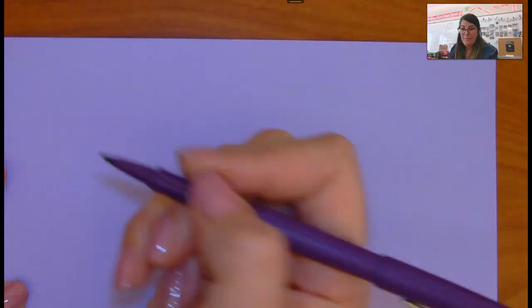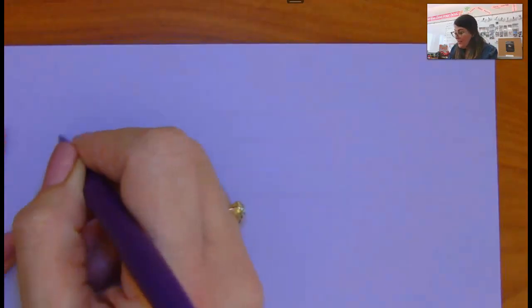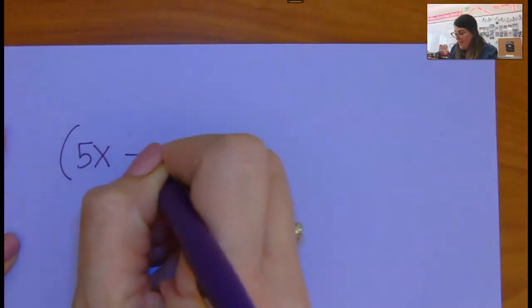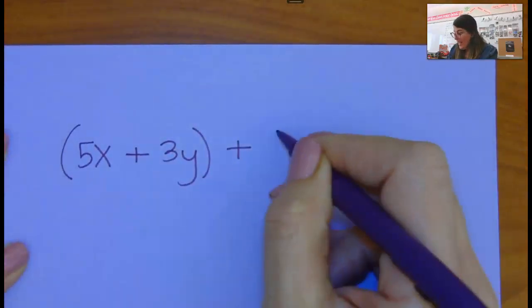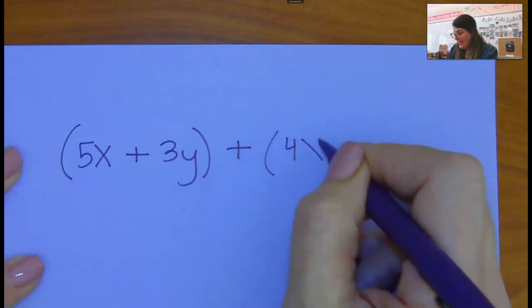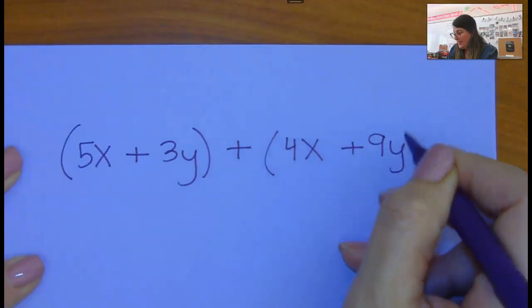Okay, if you are watching this and you are having troubles with adding and combining your like terms, so basically if you have 5x plus 3y and you have an addition problem and you have x's and y's inside of here.